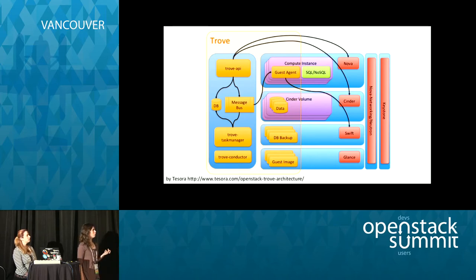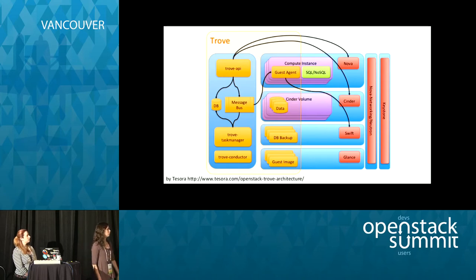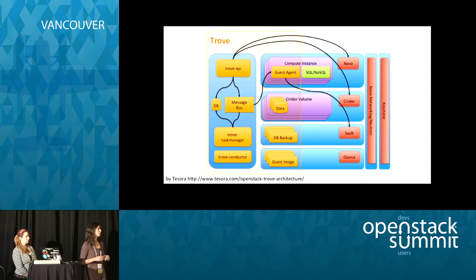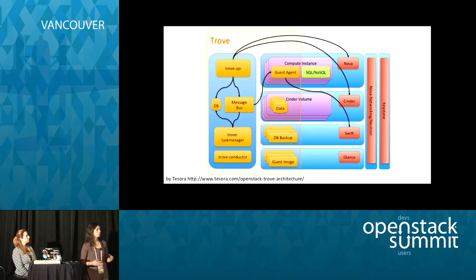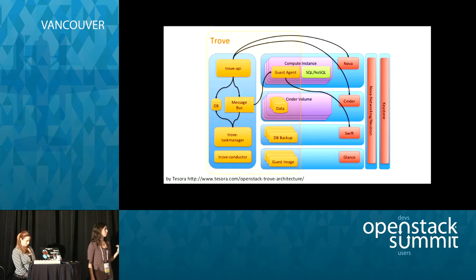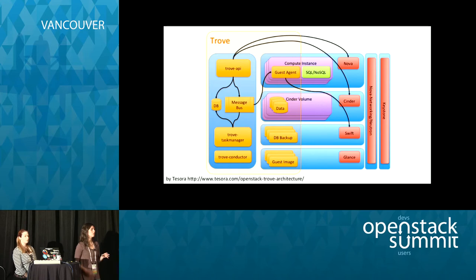Now let's focus on the Trove components themselves. On the top we have the Trove API. We have the Trove Task Manager, the Guest Agent, and the Trove Conductor. All these parts interact with each other through a message bus — they send messages using this message bus to perform different operations. The Trove API's main purpose is to get requests, translate them into a format that Trove can understand, validate those messages, and forward them to the Trove Task Manager and the Trove Guest Agent. It's the interface with the user and is in charge of command and control of the data stores you have in Trove.